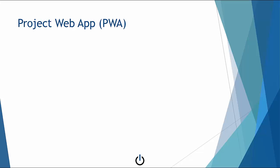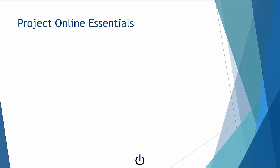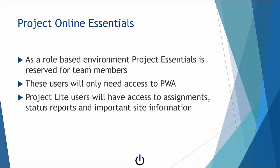PWA is the front end of Project Server or MSPO — it's the home page of these two environments. Users are authenticated and granted specific role-based permissions when connecting to PWA. Project Online Essentials, formerly known as Project Lite, is reserved for team members — users who will submit task updates, respond to status reports, and access project site information.